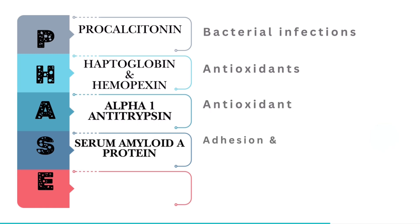Letter S is for serum amyloid A, the SAA protein. SAA enhances adhesion and chemotaxis of inflammatory cells.